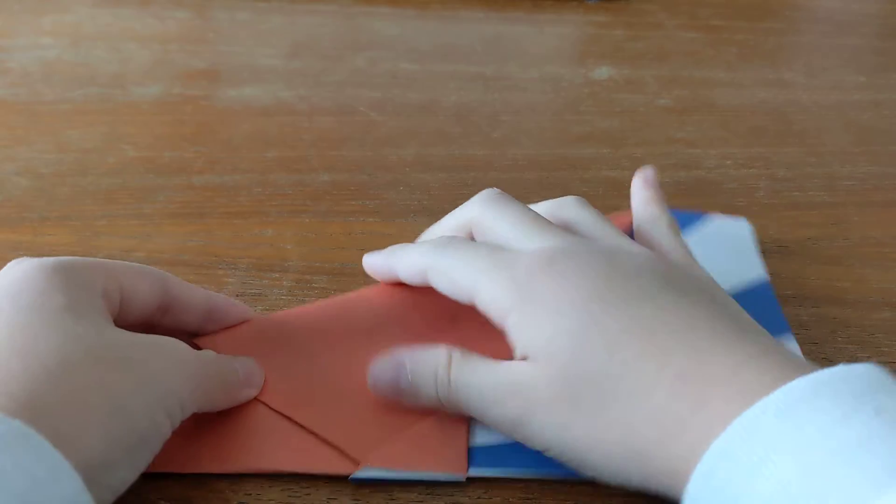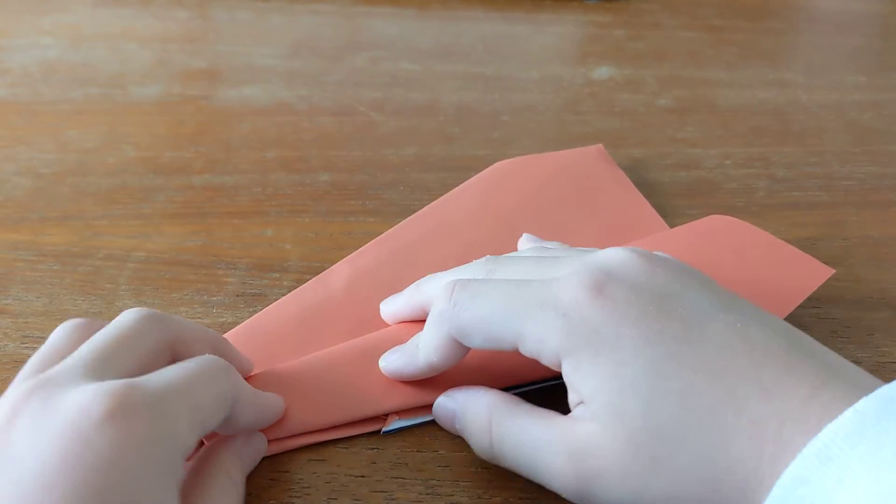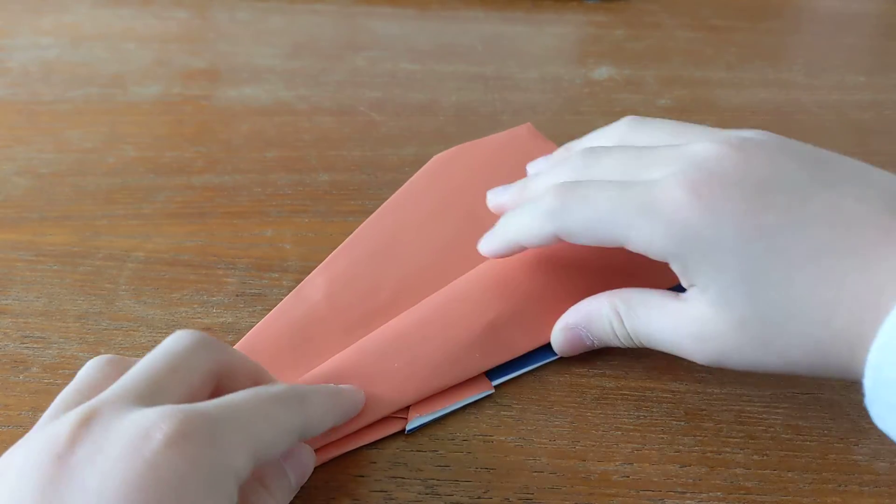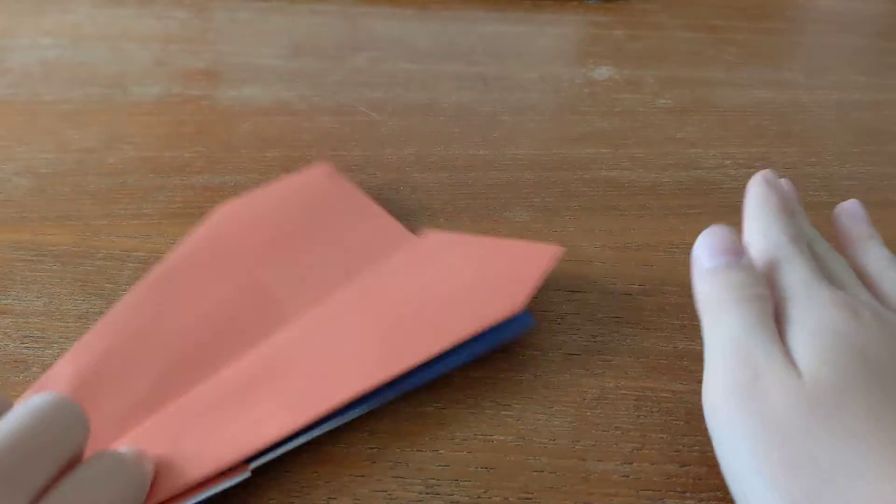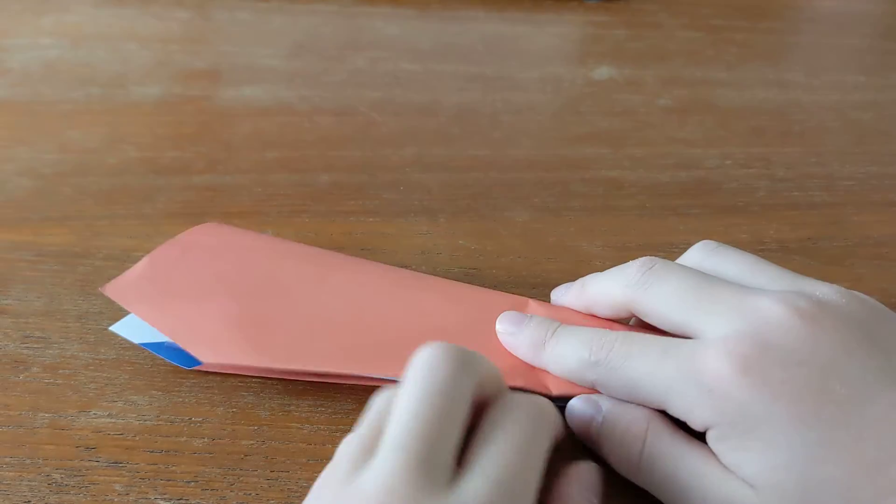Then grab this part and fold it down here. Make sure it aligns together, that this line and this line are together. Same with the other side.